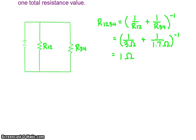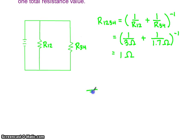So now essentially what we have is a circuit with one equivalent resistance value that we would call R1234, that is 1 ohm. That value is going to allow us to calculate the total current for this circuit.